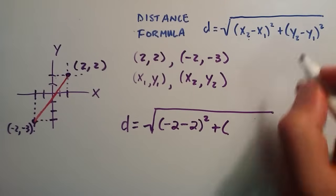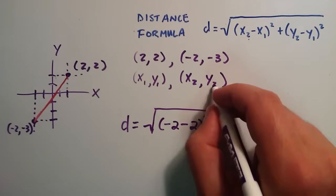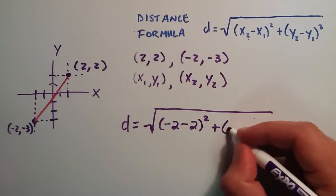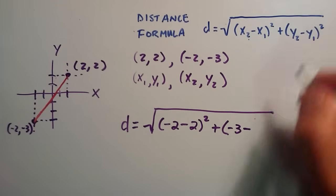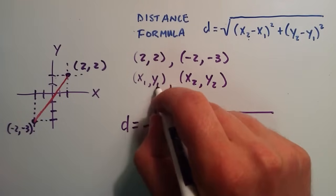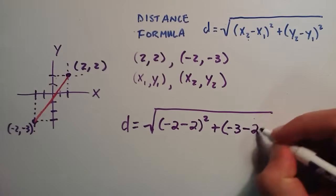And then we add that to y2, which is the right hand side of this point. So that's a negative 3. And we subtract y1. And y1 corresponds to the right hand side of this point, which is a 2.